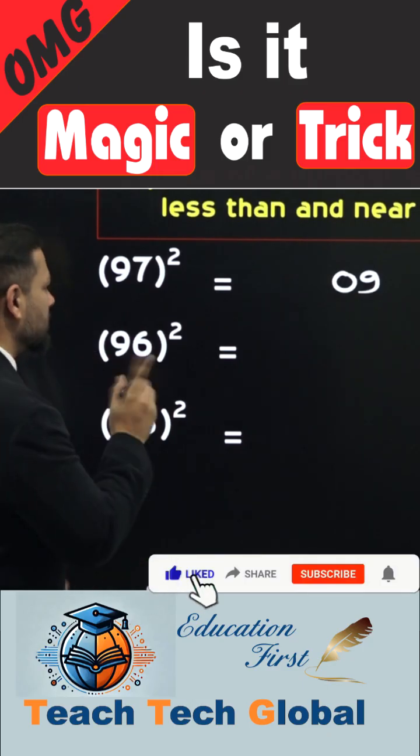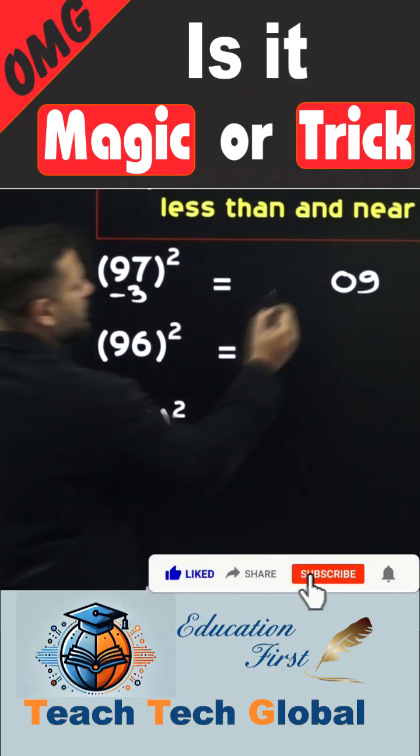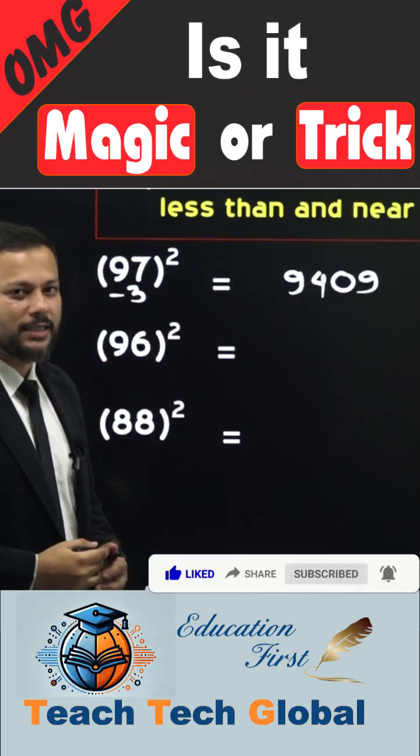Since this number is 3 less than 100, so we will subtract 3 from it. What will be the difference? It is going to be 94. So that is the answer in front of you guys.